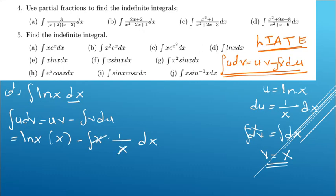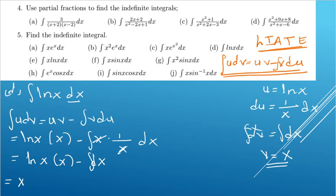We remain with ln(x)·x minus the integral of dx. The final answer is x·ln(x) minus x plus a constant C. This is how we solve this particular question.